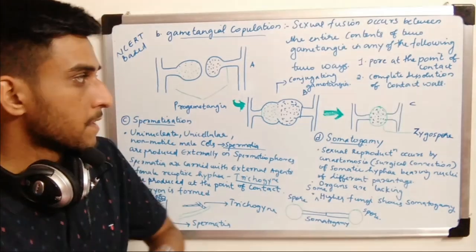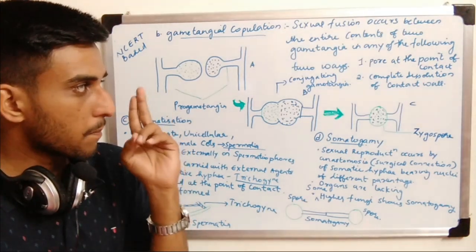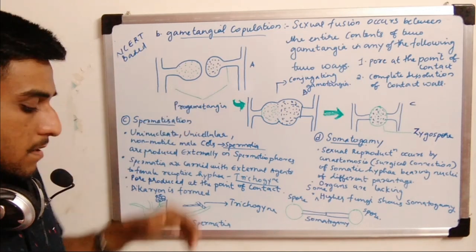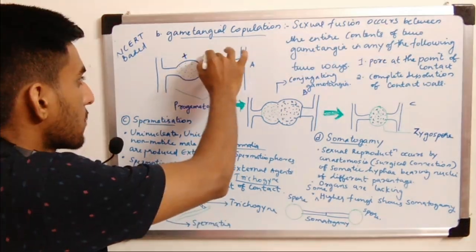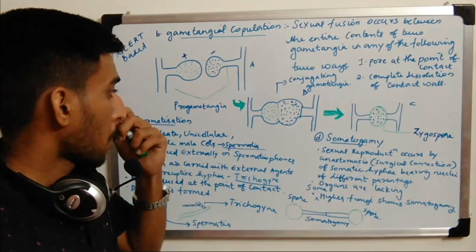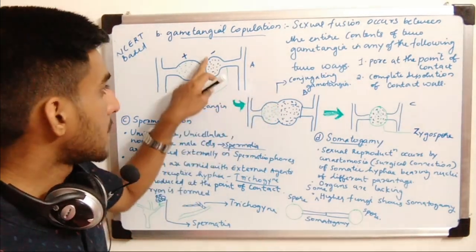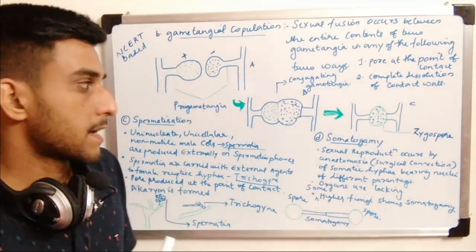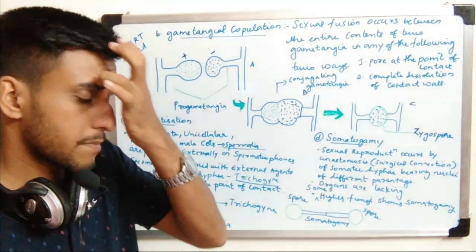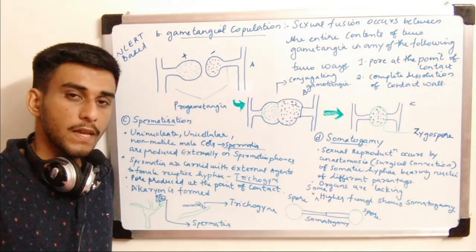Sexual fusion occurs between the entire content of two gametangia in one of two ways: either by a pore at the point of contact, or by complete dissolution of the wall. Two different gametangia of opposite sex come together, and the common content formed is known as the zygospore, which later contains haploid spores after meiotic division.